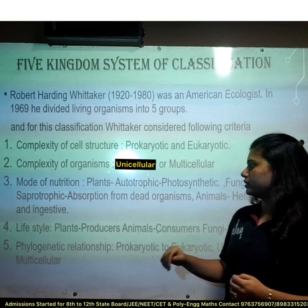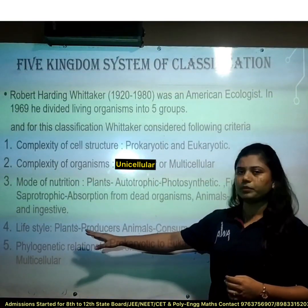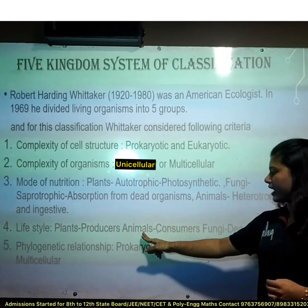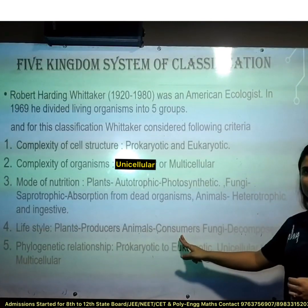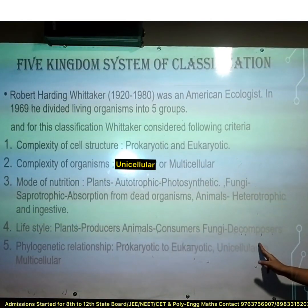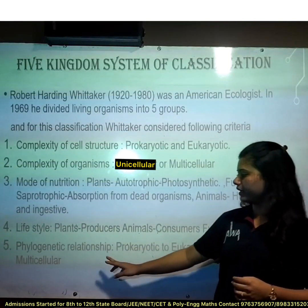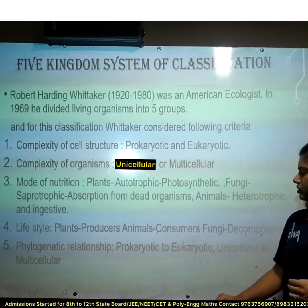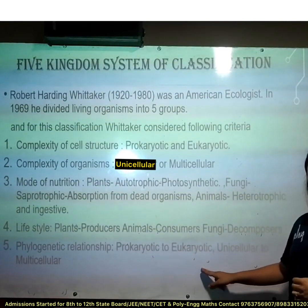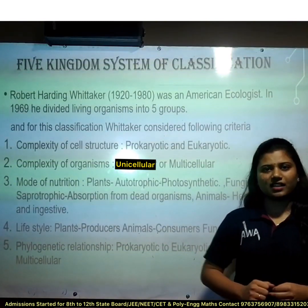Fourth is lifestyle. Plants are producers, animals are consumers, and fungi are decomposers. Fifth is phylogenetic relationship — the genetic relationship of prokaryotic to eukaryotic and unicellular to multicellular.